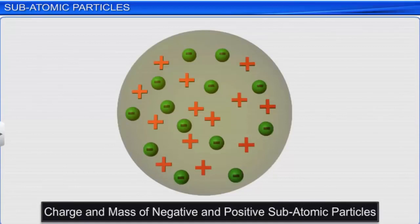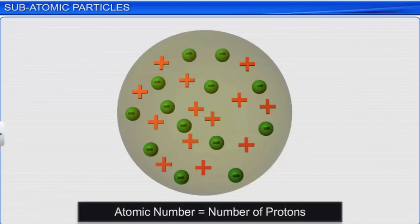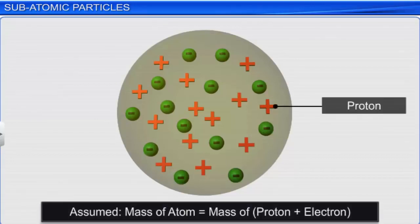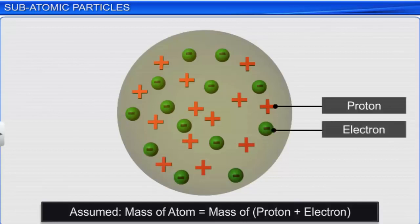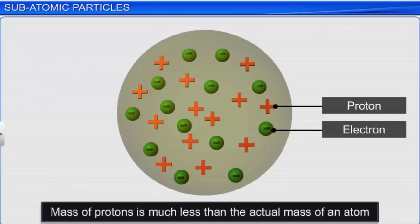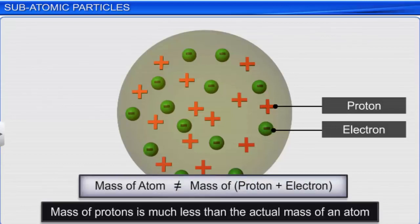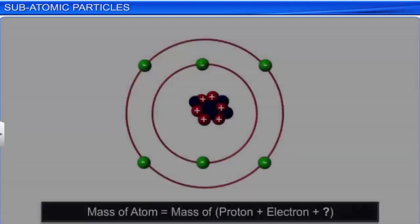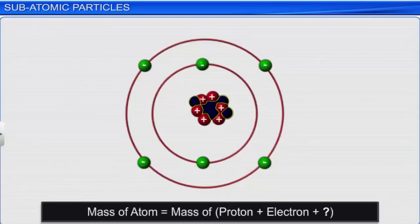By 1913, after performing considerable research on charge and mass of subatomic particles, scientists tried calculating atomic mass. It was determined that the atomic number of an element equals the number of protons in its nucleus. Since each proton has one unit mass on the atomic scale, the mass of an atom was thought to be equal to the number of protons. However, it was discovered that the mass of all protons combined is much less than the actual mass of an atom, implying the existence of other particles with considerable mass but no charge.